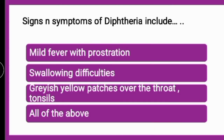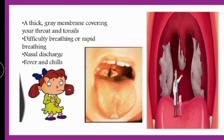Question four: signs and symptoms of diphtheria include mild fever with prostration, swallowing difficulties, grayish-yellow patches over the throat and tonsils, or all of the above. The correct answer is all of the above. Prostration means intense weakness or a collapsing feeling. The characteristic feature of diphtheria is grayish-yellow patches over the throat and tonsils, which also cause swallowing difficulties.